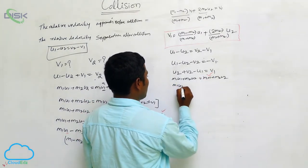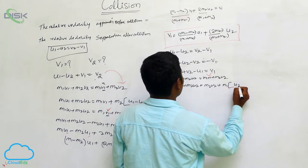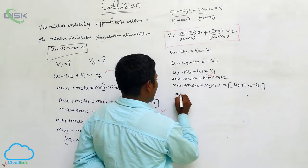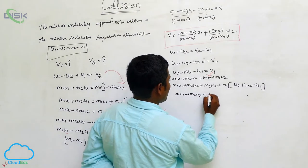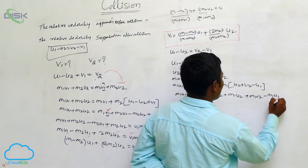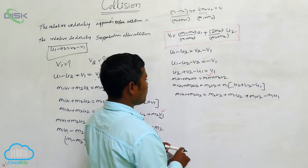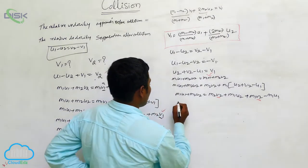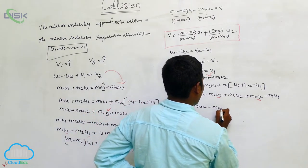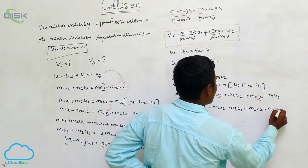After substituting V1: M1 U1 plus M2 U2 equals M2 V2 plus M1 (U2 plus V2 minus U1). Expanding: M1 U1 plus M2 U2 equals M2 V2 plus M1 U2 plus M1 V2 minus M1 U1. Rearranging — the M1 U1 terms cancel on both sides. We get M2 minus M1 times U2 on the left. The V2 terms: M2 V2 plus M1 V2, so V2 times (M2 plus M1) on the right.